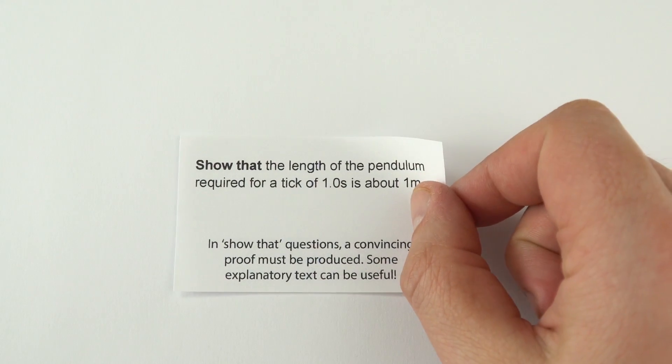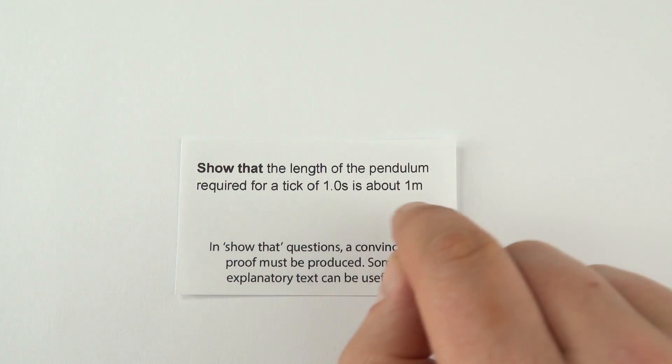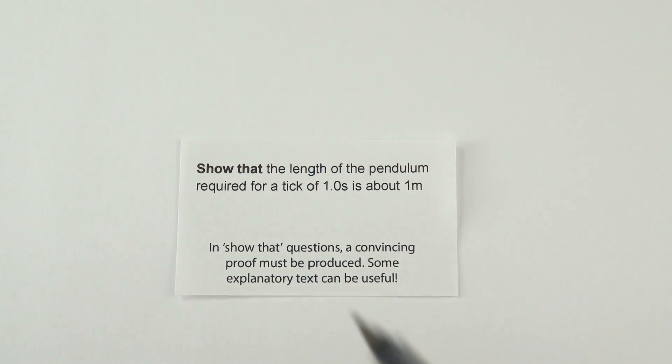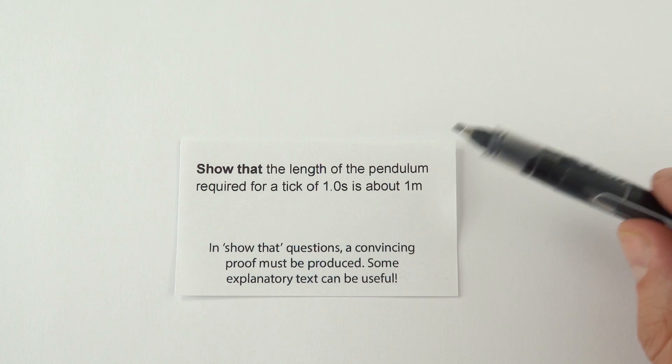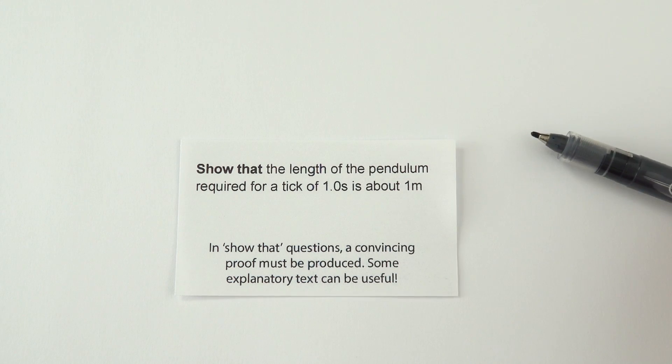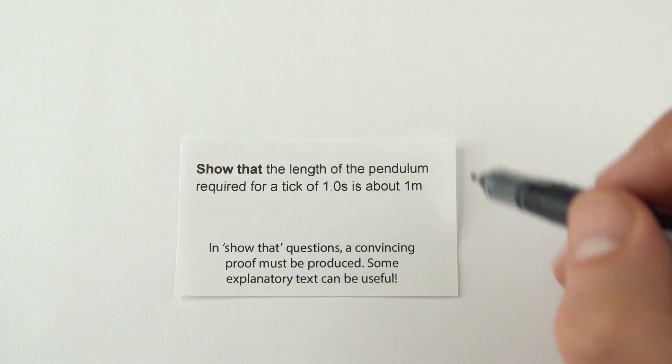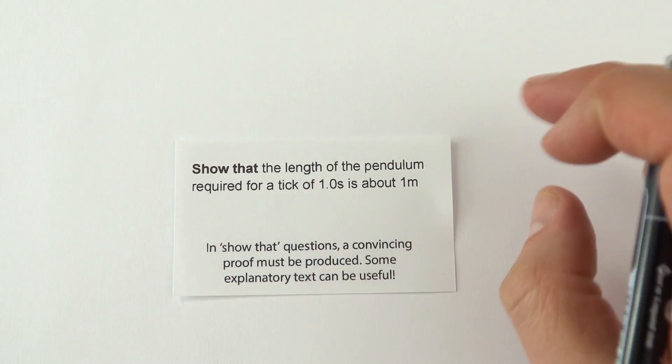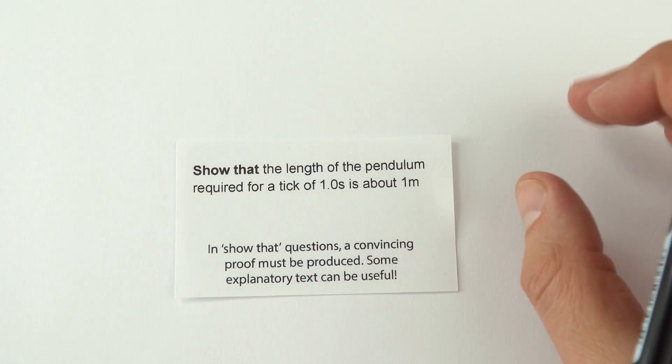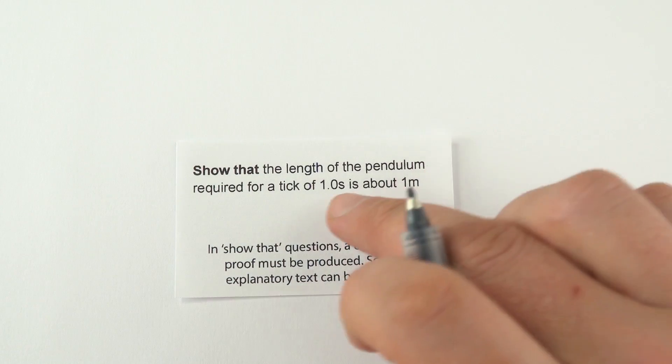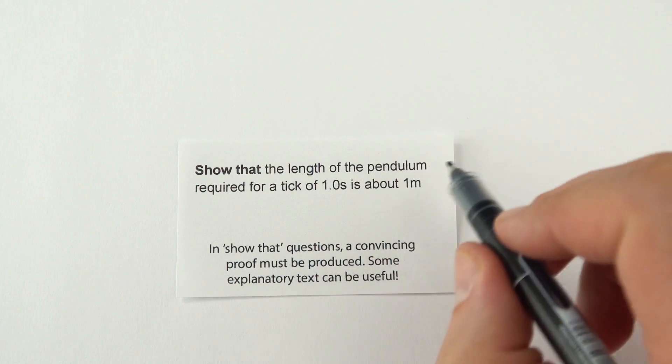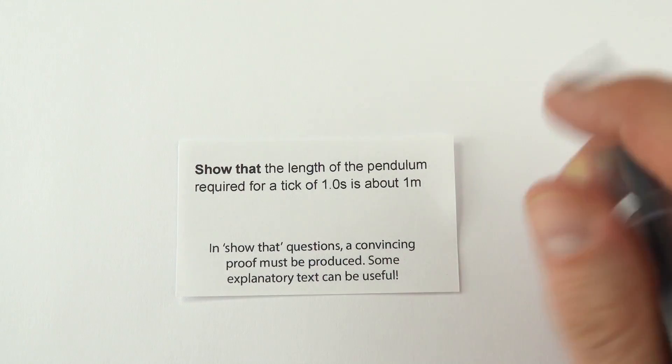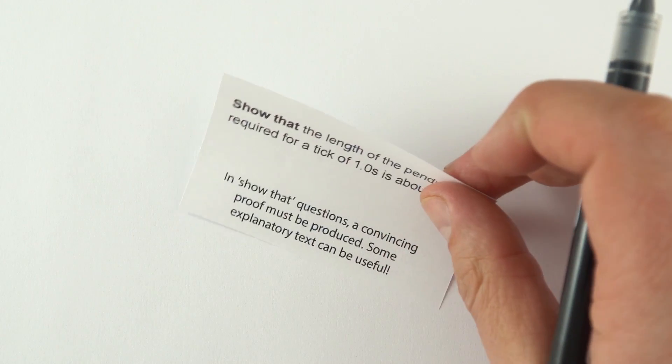Something we see a lot of are show questions, where you've got to show something is about something else. In these ones, you need to have a convincing proof. A lot of the time, you might be using calculations and numbers, but text can really be helpful. You might say that this is equal to this, and therefore... There's nothing wrong with having a couple of words to show where that equation came from, to show which numbers you're putting into it. When you give your final answer, make sure that you actually put that statement that this shows that this is equal to this.